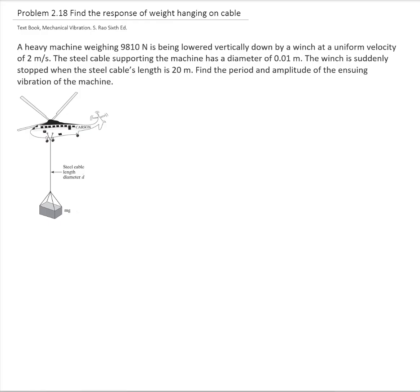We will do the free body diagram of the machine. So we have the weight, and we will be measuring the displacement of the machine from the static equilibrium position. That means that the weight of the machine will cancel out with the static deflection of the cable. Therefore, I will not write the weight in the free body diagram.